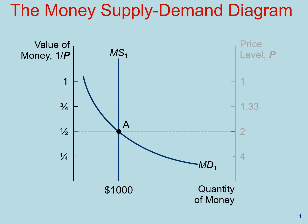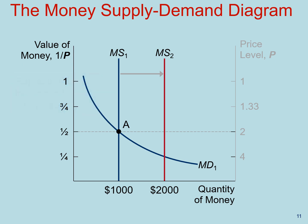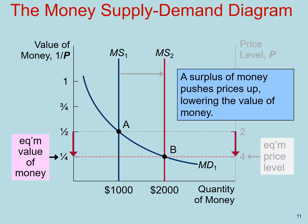Now that you understand how we reach equilibrium, let's suppose that the Fed increases the money supply from MS1 to MS2. Initially there is a surplus of money that's going to push prices up and reduce the value of money. The new equilibrium B will be at a higher level of prices and a lower level of the value of money.